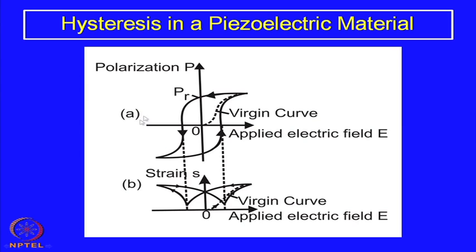However, in piezoelectric materials there is an additional feature: the change of strain as a function of electric field. In ferroelectricity alone, we did not have that effect and so we did not have this kind of curve. Here, since we are talking about mechanical energy, it also generates a mechanical strain, and one can find out what strain is generated as a function of electric field — again following a virgin curve from the initial state of the poled material.